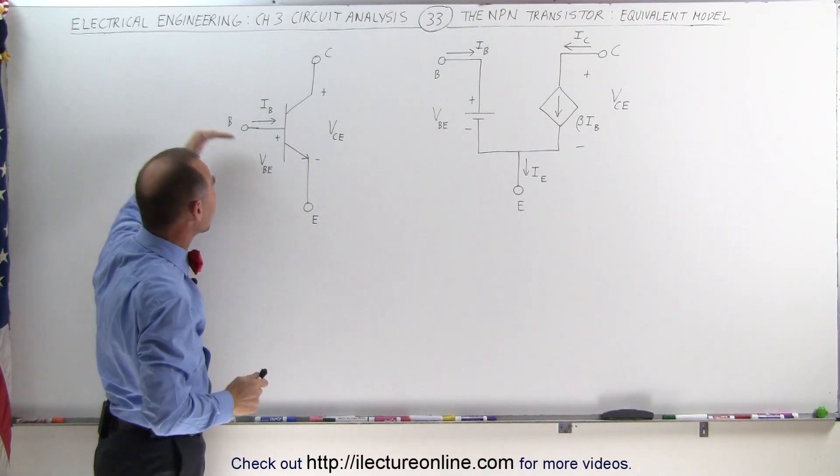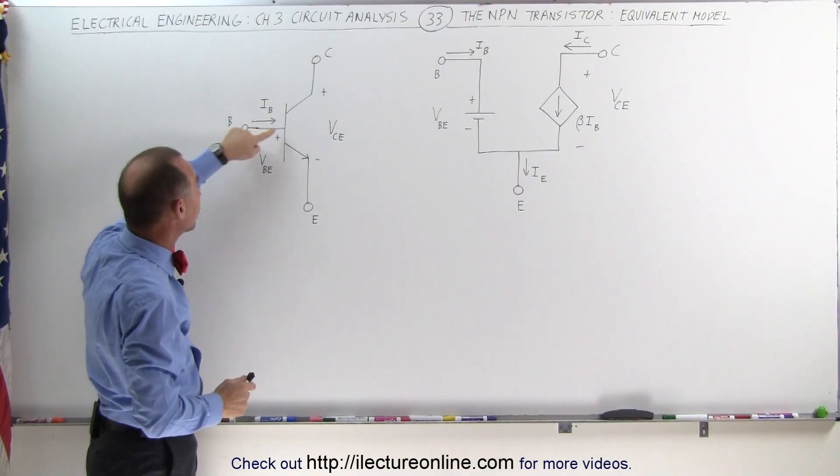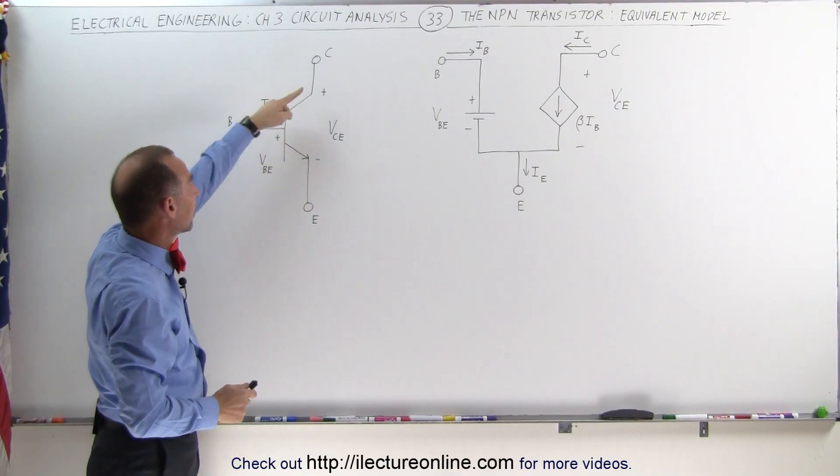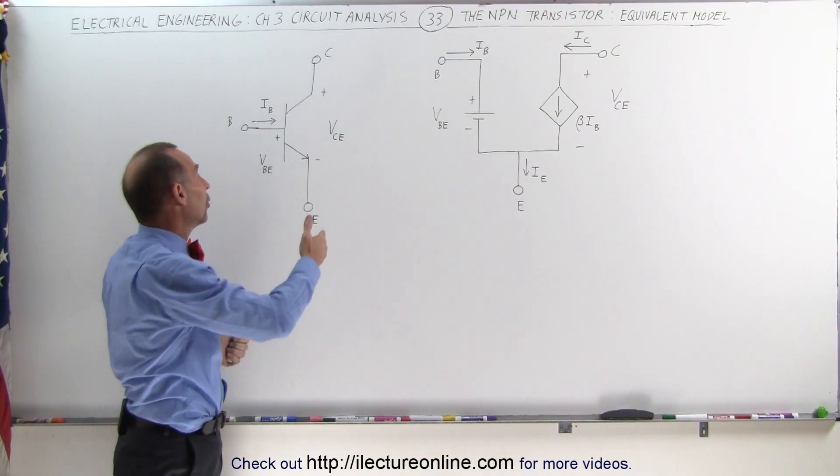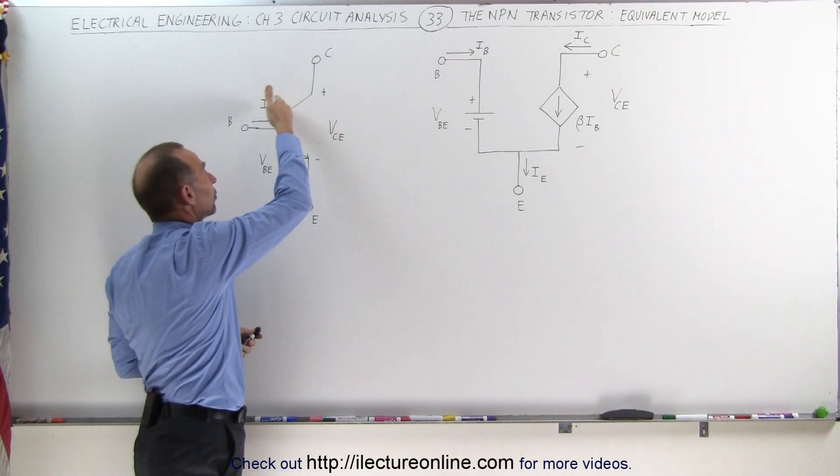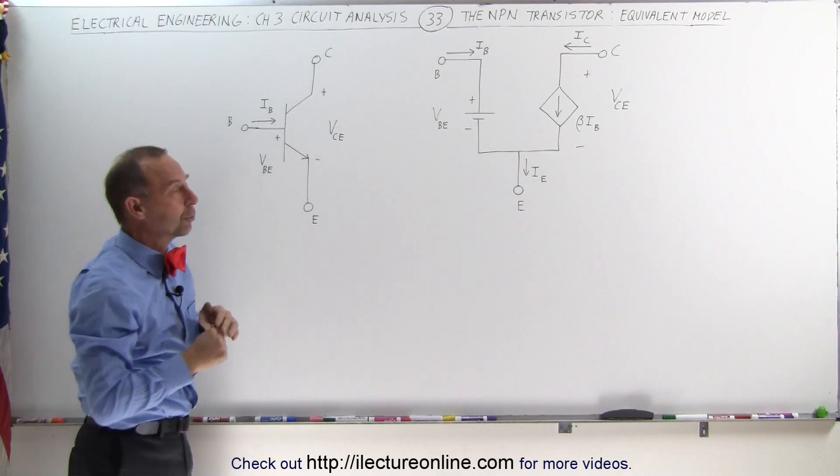We still understand that there's a base current flowing from the base to the transistor and that allows current to flow from the collector to the emitter. The current gain is determined by the ratio of the amount of current coming from the collector relative to the amount of current flowing through the base.